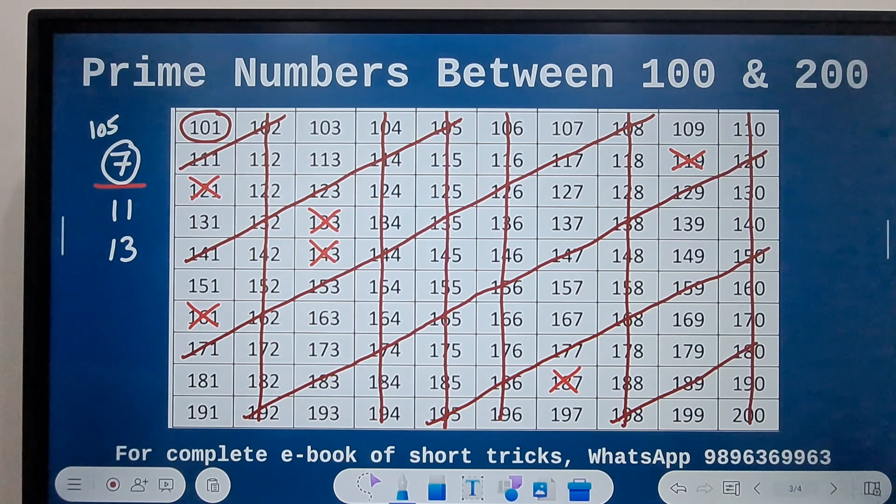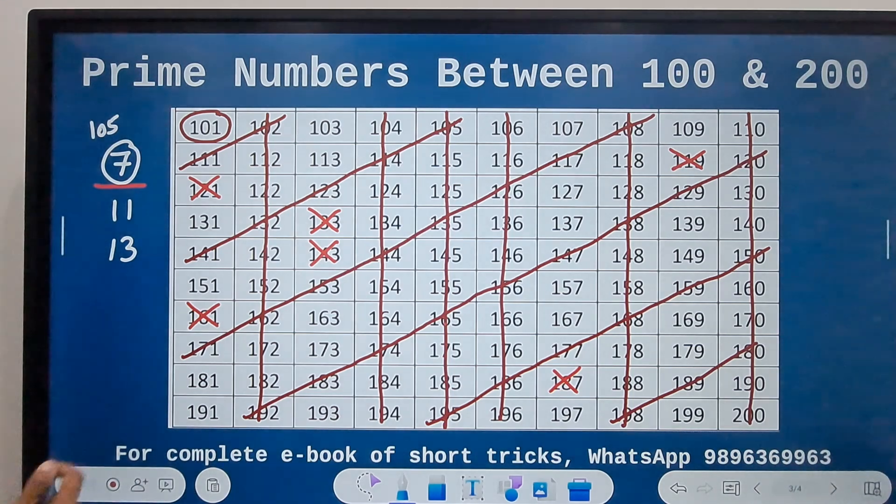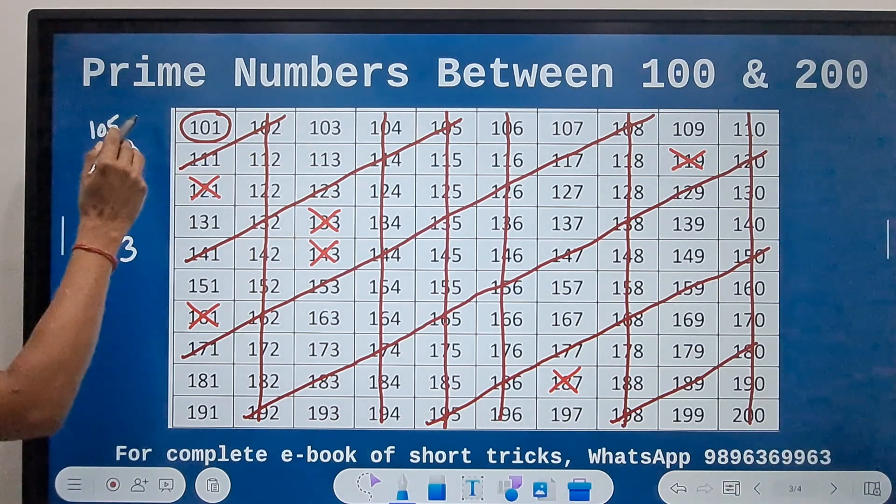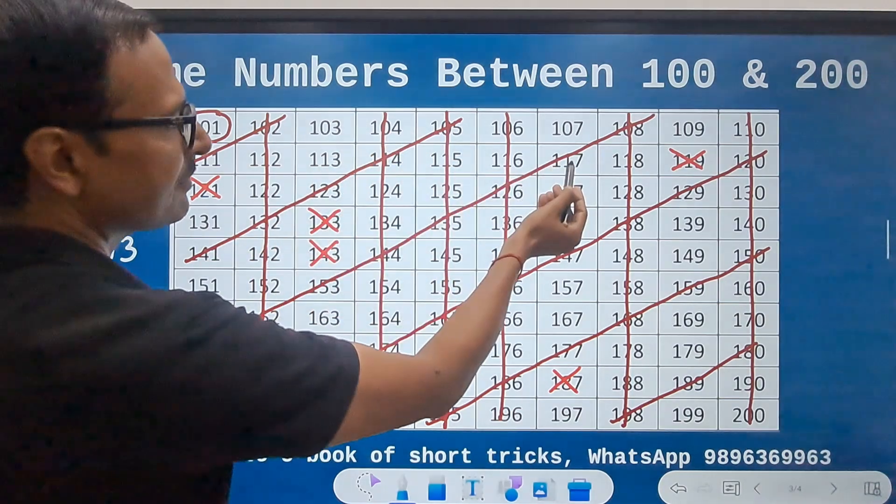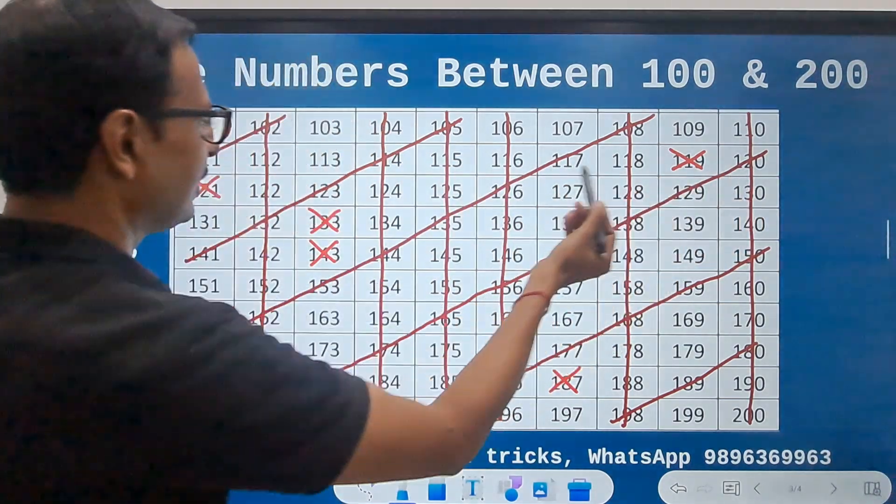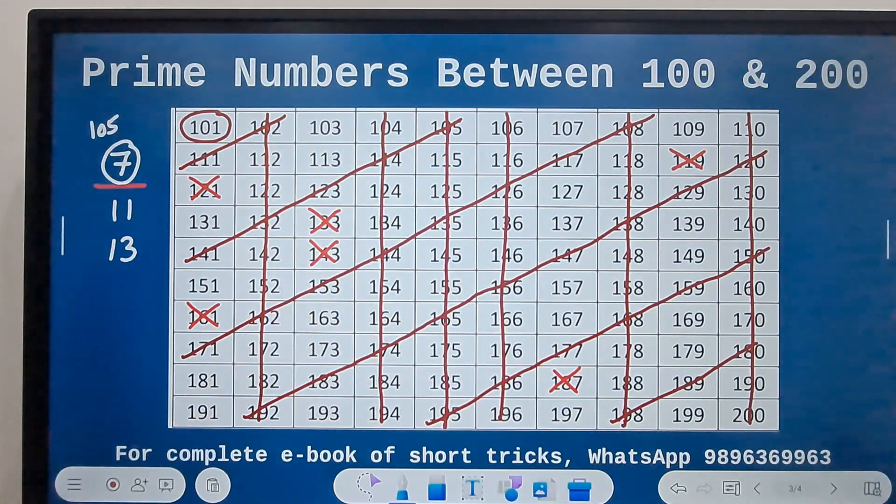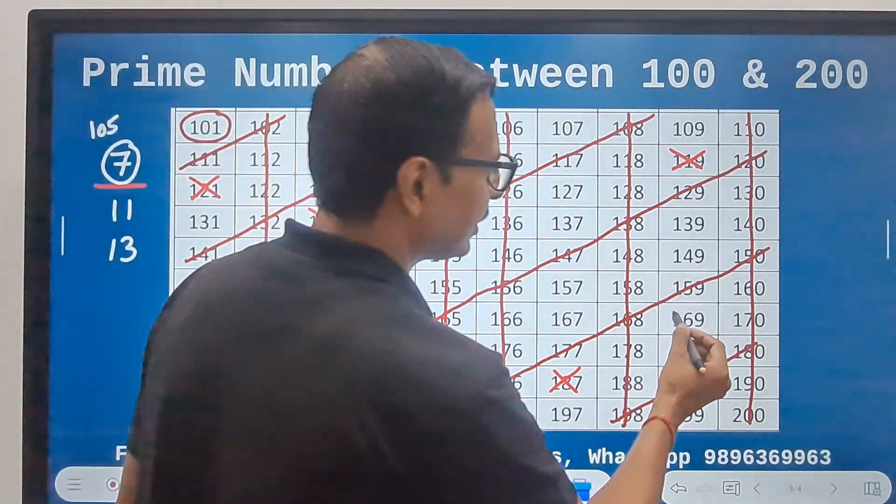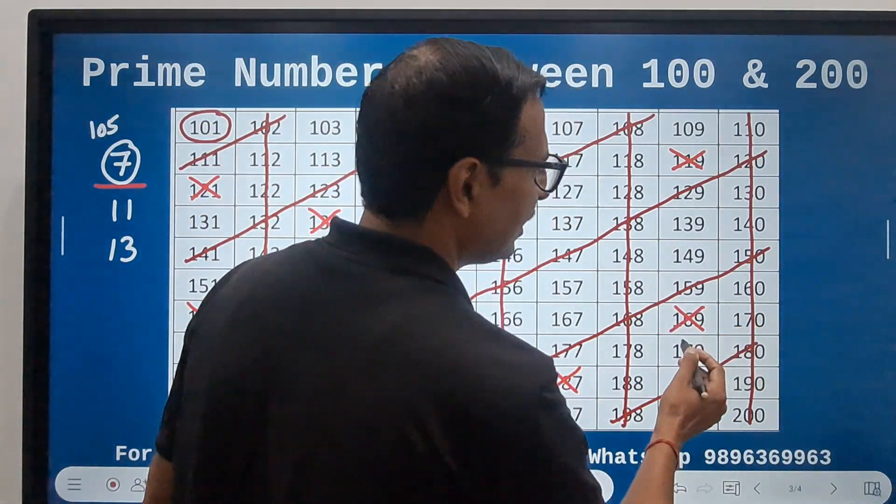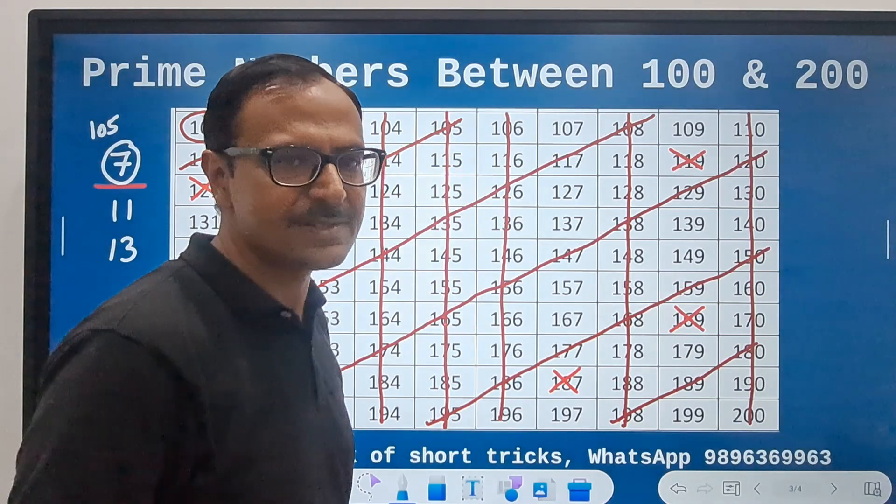And finally, we have the number 13. So for 13, 13 times 7 is 91, 13 times 8 is 104. So 104 and 13 is 117, then 130, then 143, and likewise you can go on and on, and you will find only one number in the table of 13, that is 169. 13 squared is 169.